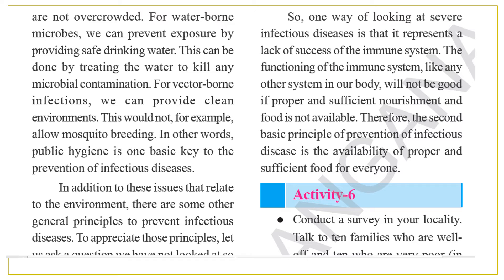For water-borne diseases, we prevent exposure by providing safe drinking water. This can be done by treating the water to kill any microbial contamination. For vector-borne infections, we can provide a clean environment. In village settings, people wash clothes in dirty water and sometimes even take that same water for drinking. Animals urinating in the water make it infectious and spread disease. This would not, for example, allow mosquito breeding. In other words, public hygiene is one basic key to the prevention of infectious diseases.